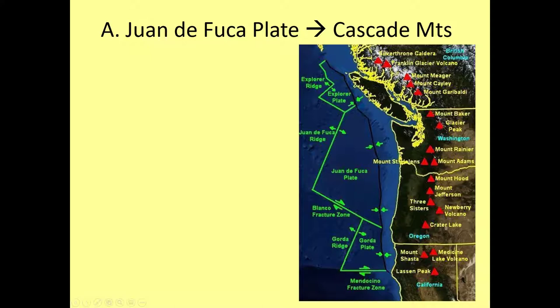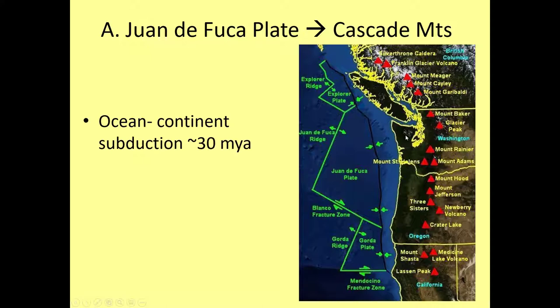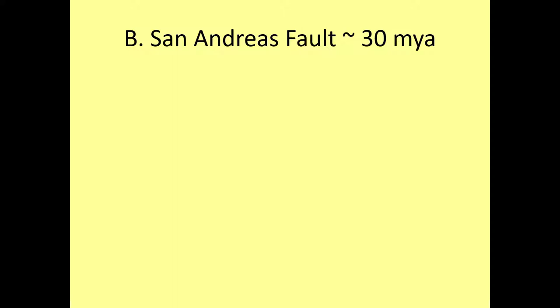These names should look familiar: Mount Rainier — the most dangerous volcano in the United States — Mount St. Helens, Mount Hood, Crater Lake, all the way down into Shasta, and up into British Columbia in Canada. The Cascade Mountains are the result of ocean-to-continent convergence and subduction, where you have the Juan de Fuca Plate subducting beneath North America beginning about 30 million years ago — the same time that the San Andreas Fault is born, with subduction of a chunk of mid-ocean ridge beneath North America.